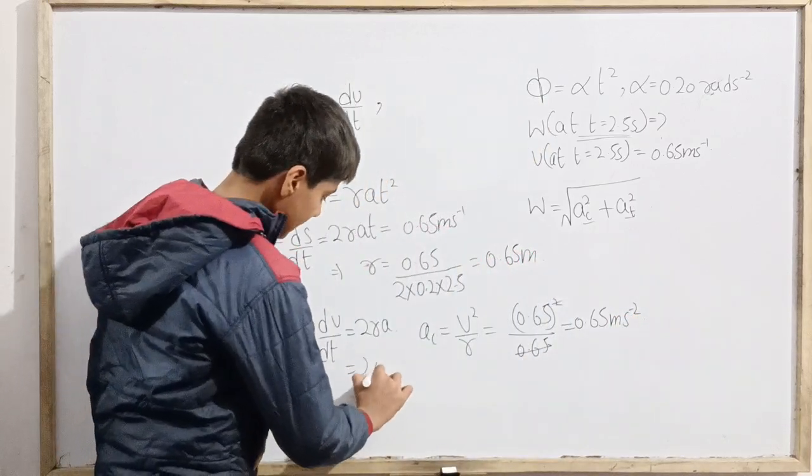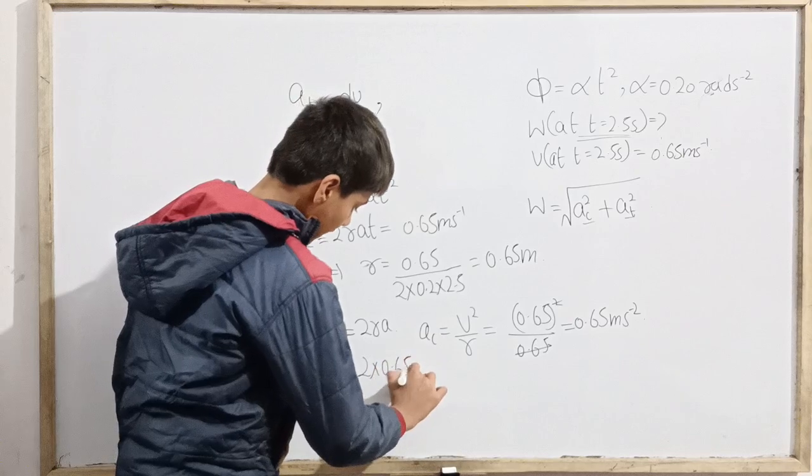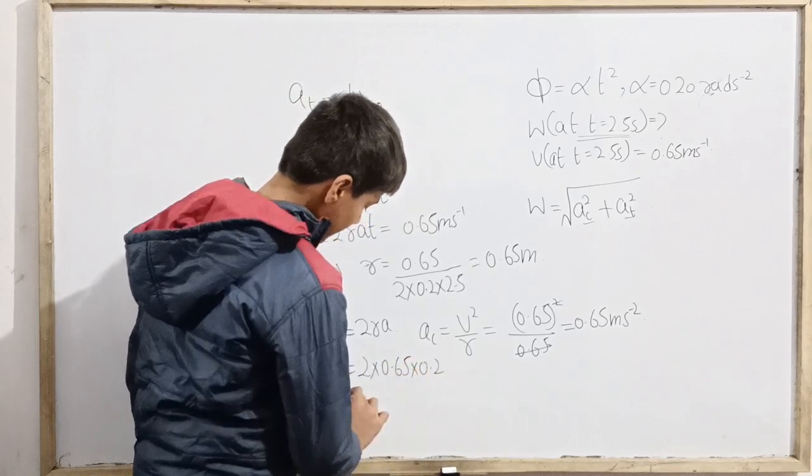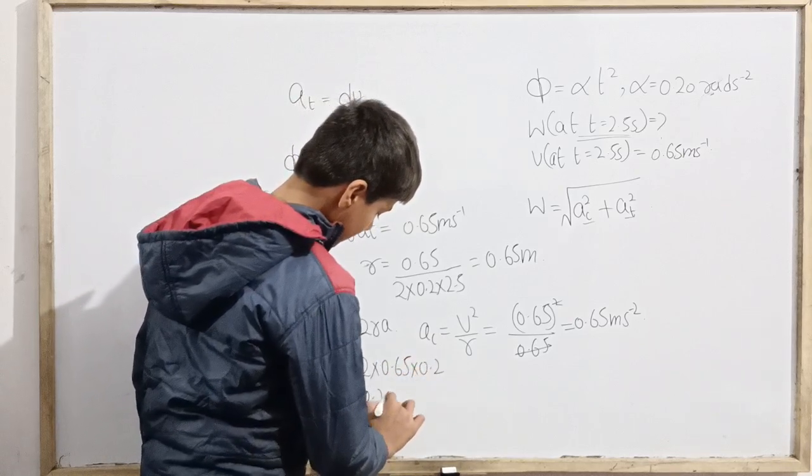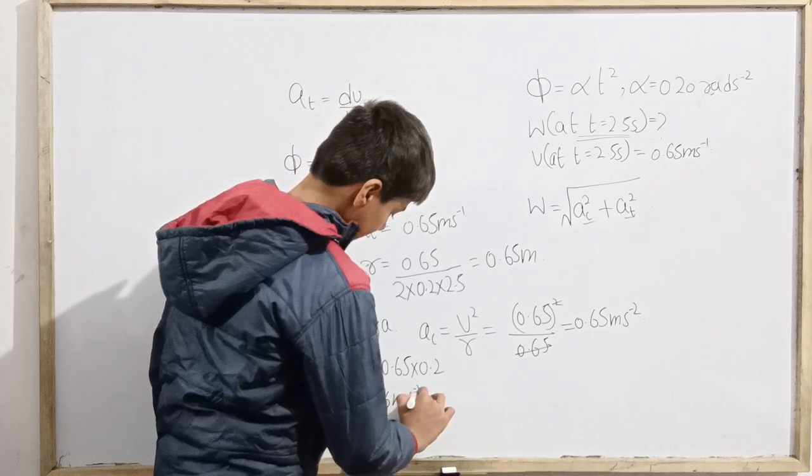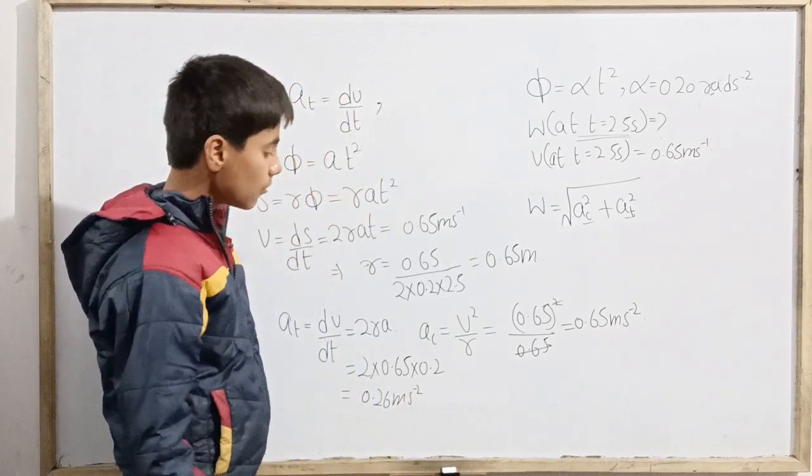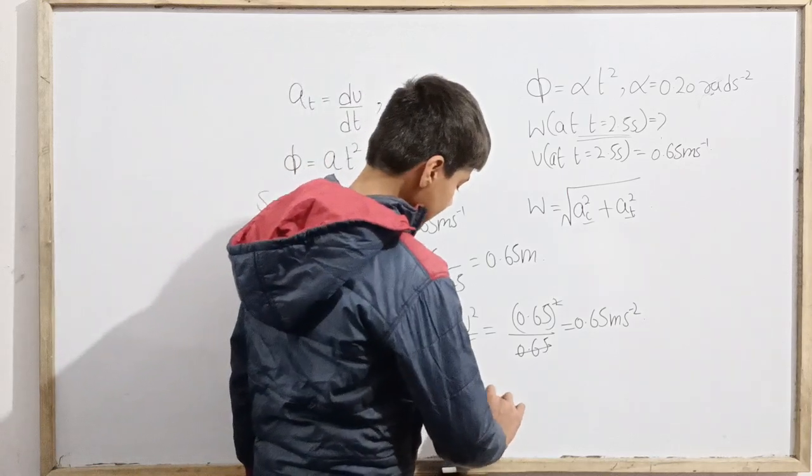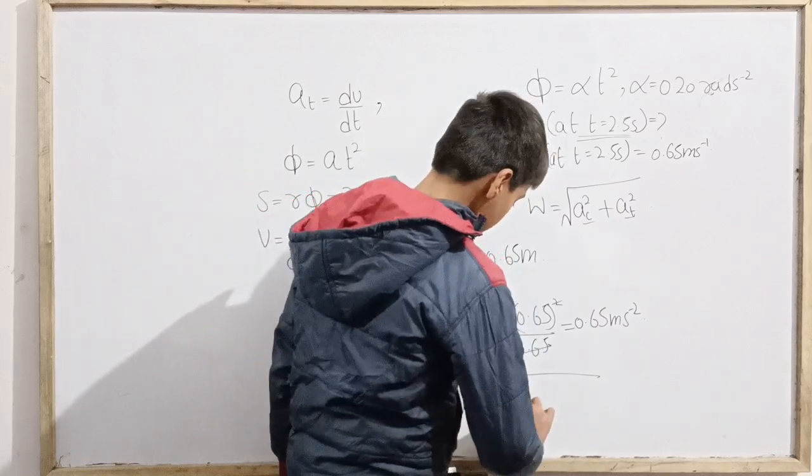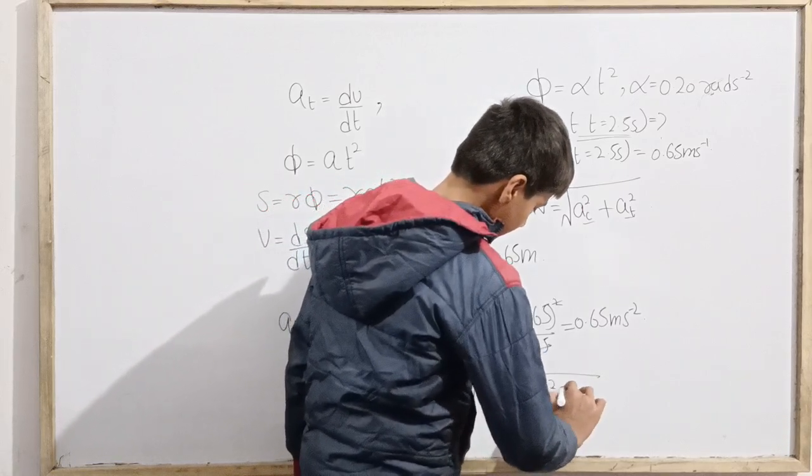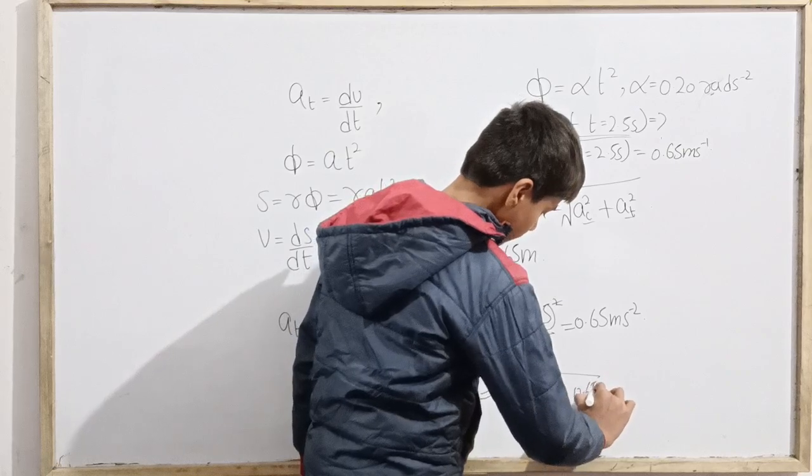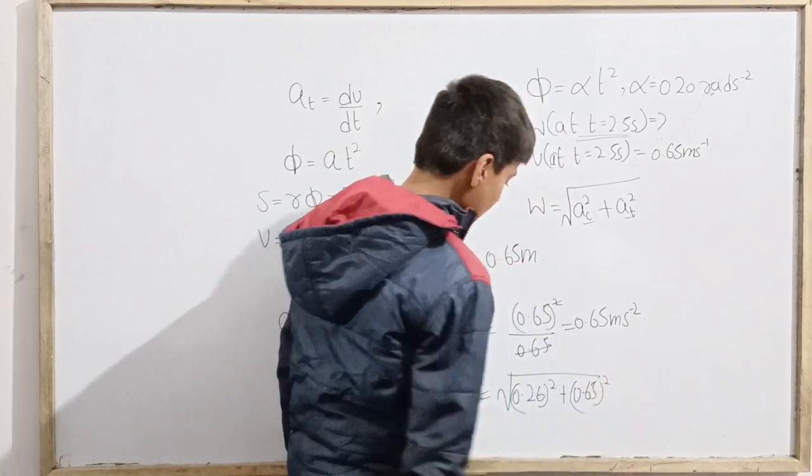Rest, we can see that 2 into 0.65 into 0.2, this becomes 0.26 meter per second squared.